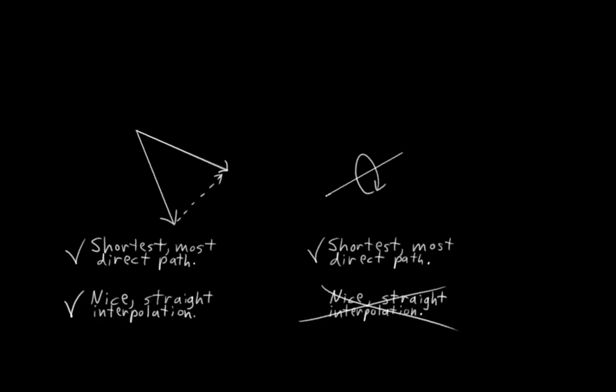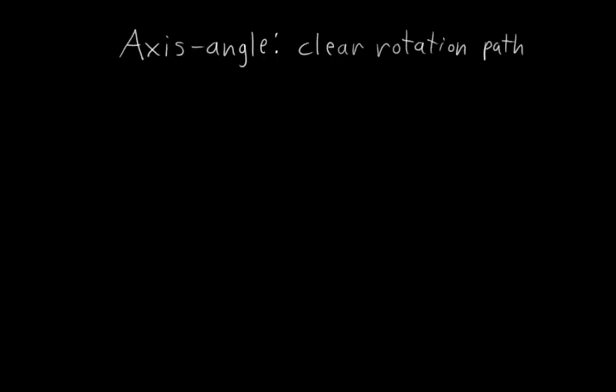Unfortunately, that's not the case, and you can get some slightly wonky interpolations between some axis angle rotations. It's also worth noting that it defines a very clear rotation path, a rotation around a single axis. And it's a looping path of rotation, which means that revolutions are meaningful. Hooray!